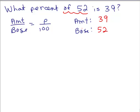It sometimes comes after the word 'is', but not always. So we've got the amount over the base. It's going to be 39 over 52. So I'm going to write that over here, 39 over 52 is equal to, now I'm looking for P, so I'm going to write P over 100. And then I'm going to use my cross multiplication again.